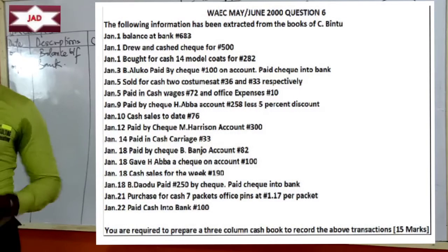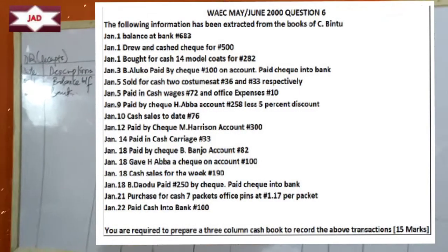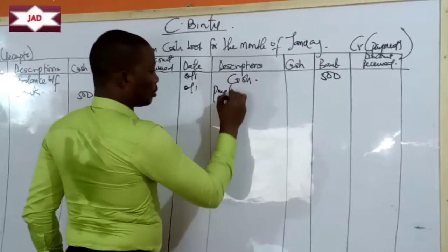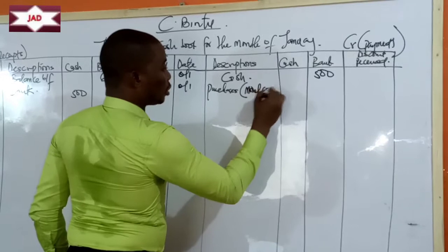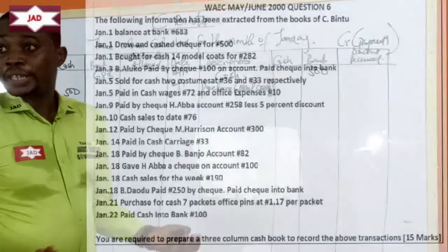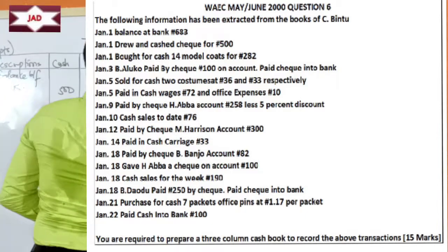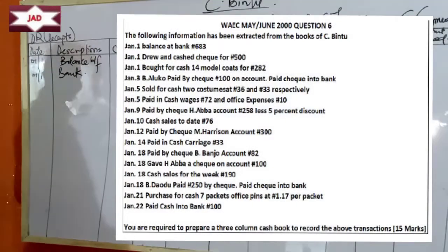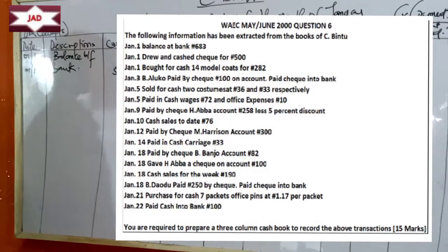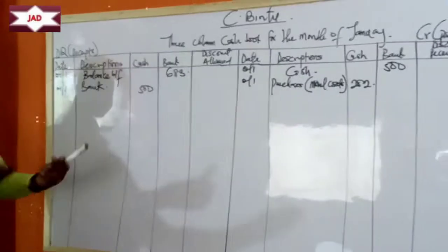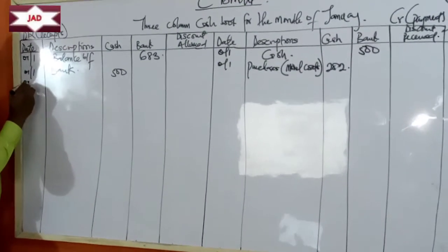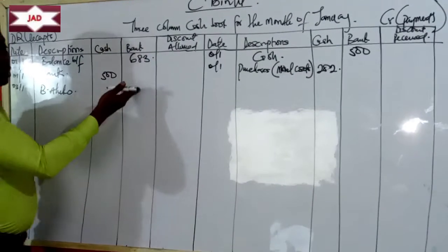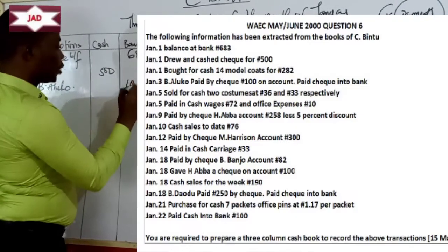On the payment (credit) side for January 1st, we record the 500 Naira leaving the bank column. On the receipt (debit) side for January 1st, we record the 500 Naira entering the cash column. So we drew money from the bank and paid it into cash. The next entry: January 1st, bought for cash 14 model quotes for 282 Naira. When we buy, that means we pay — so that's a payment. We record January 1st, purchases, in the cash column for 282 Naira. The next entry is January 3rd. Bialuko paid by check 100 Naira. Bialuko is paying CBintu, so money is coming into the business.